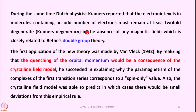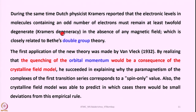In double group theory, Bethe stated that the degeneracy of a gaseous metal ion will not remain intact when it enters into a crystal field — it is destroyed and forms a set of two groups. This is called Bethe's double group theory, and it is more or less similar to what Kramers observed as Kramers' degeneracy rule.